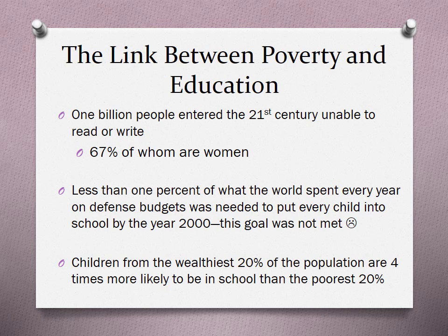Children from the wealthiest 20% of the population are four times more likely to be in school than the poorest 20%.